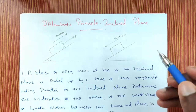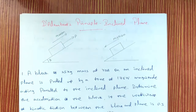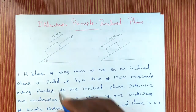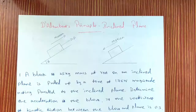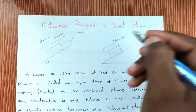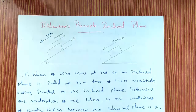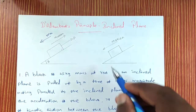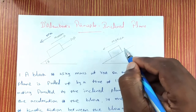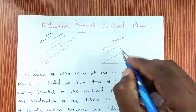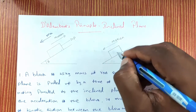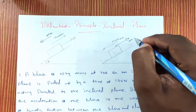Here in this image, a block is resting on a rough inclined plane. The block is pulled up by a force P. Since the block is moving in the upward direction, as per D'Alembert's Principle, the inertial force will be acting in the opposite direction, so ma will be acting towards the left. In the second image, the block is resting on a rough inclined plane and sliding down. Since there is no external force acting, the motion is towards the left-hand side, and the inertial force ma is acting on the right-hand side.